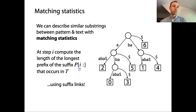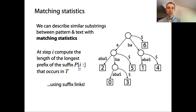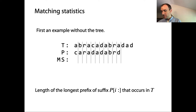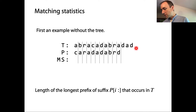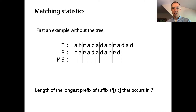We'll eventually use suffix trees and suffix links, but first let's just compute it using the definition directly. Here's our T and our P. We have a longer example of a text: 'abracadabra dad', and then we have P. This is the array ms — that's where we put our matching statistics. At each step i we want the length of the longest prefix of the suffix starting at i that occurs in T.